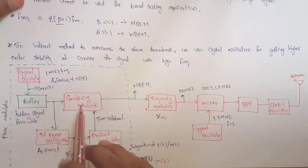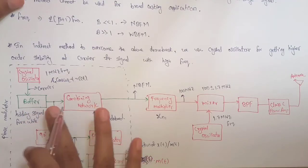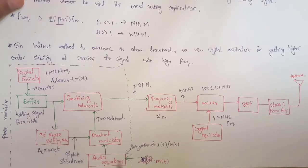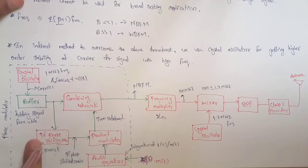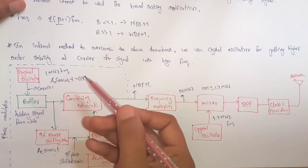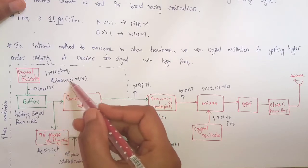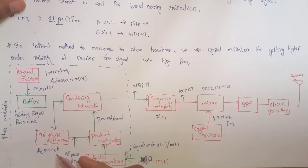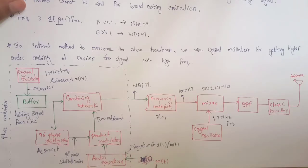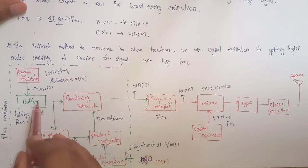The carrier signal is then sent to both a combining network and a 90-degree phase shifting network. The message signal goes through an audio integrator which integrates it, and this is sent to a product modulator. From the other side, the carrier is sent to the 90-degree phase shifting network. This shifts cos(ωct) by 90 degrees, giving sin(ωct). So the 90-degree phase shifted carrier, sin(ωct), is applied to the product modulator.